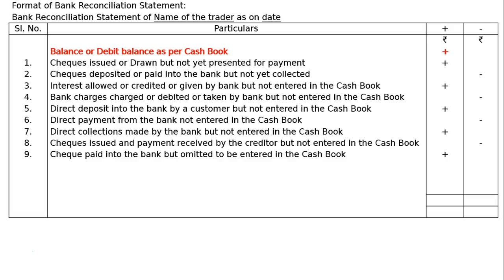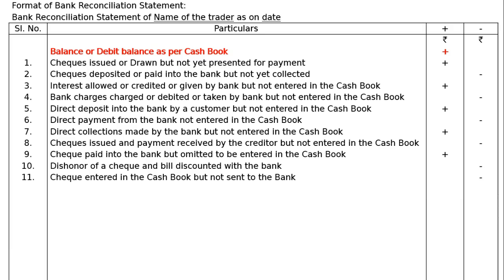Ninth item: check paid into the bank but omitted to be entered in the cash book. The trader paid the check into the bank, the bank collected the amount, and the passbook amount increased, but it was by mistake not recorded in the cash book. We have to add it to the cash book balance to find the correct passbook balance. Tenth item: check entered in the cash book but not sent to the bank. We entered the check and increased the amount in the cash book but could not deposit it. Hence we have to deduct it from the cash book balance to find the correct passbook balance.